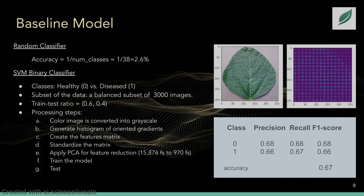The processing steps are as follows. First, we converted each color image into grayscale. Next, we generated the histogram and created the feature matrix and centered it. As there were still many features, we applied PCA to reduce the number of input features. Then we trained the SVM model. The F1 score of the trained SVM was 67% on the test set.